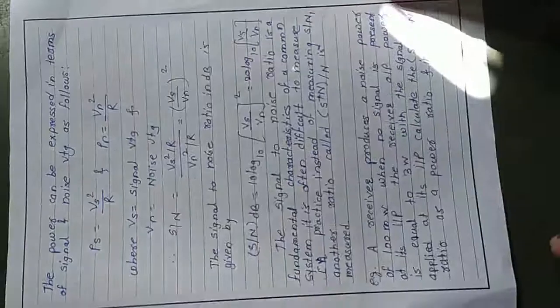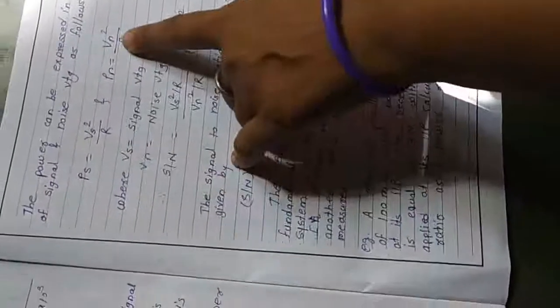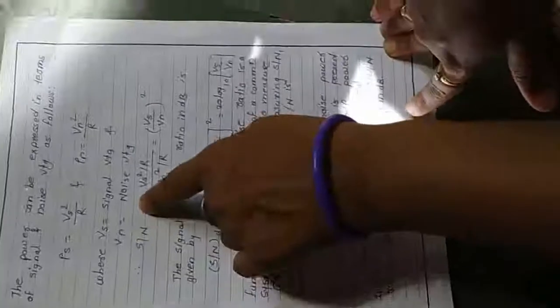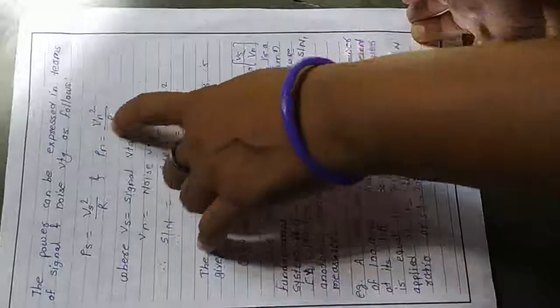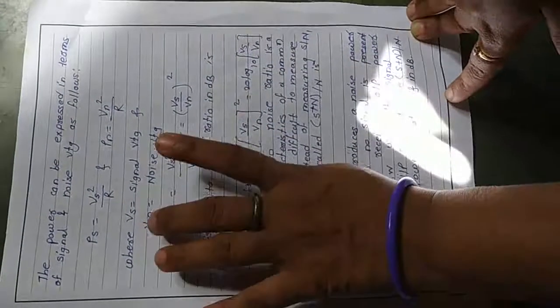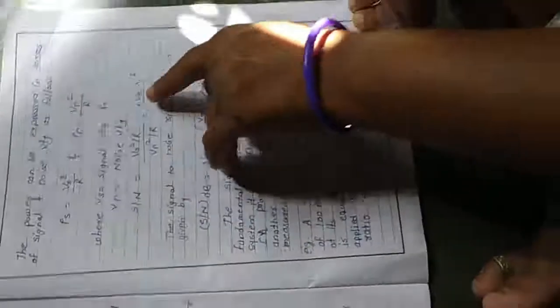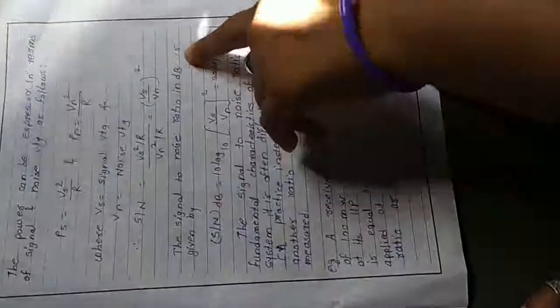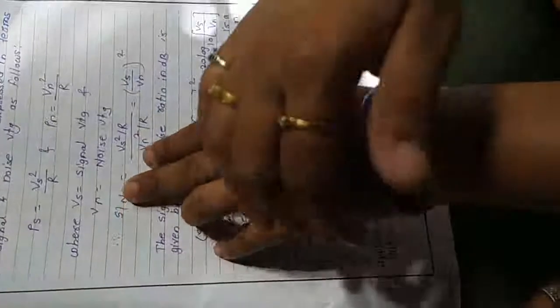The signal-to-noise ratio formula is Ps/Pn. Substituting, Ps = Vs²/R and Pn = Vn²/R — the common factor R cancels from both, giving signal-to-noise ratio = (Vs/Vn)². This is the signal-to-noise ratio expressed in terms of voltages.